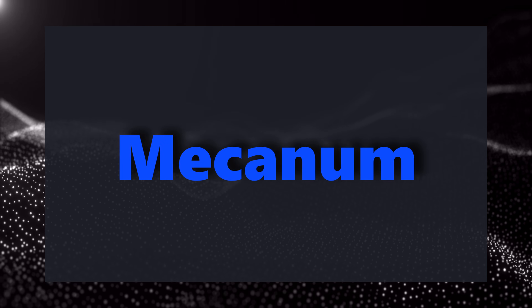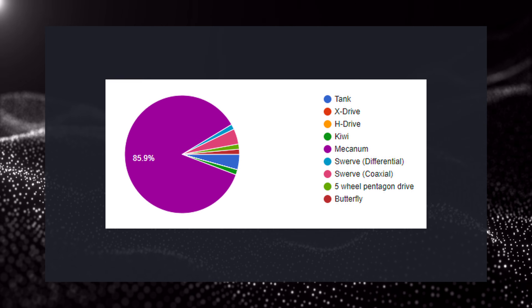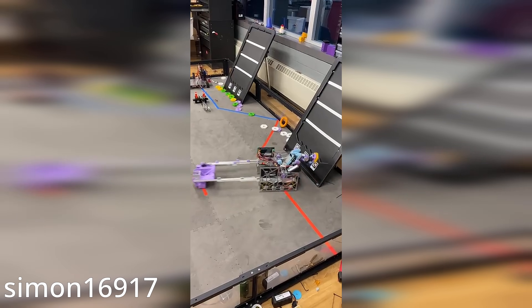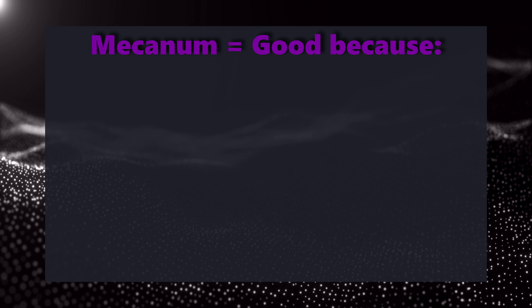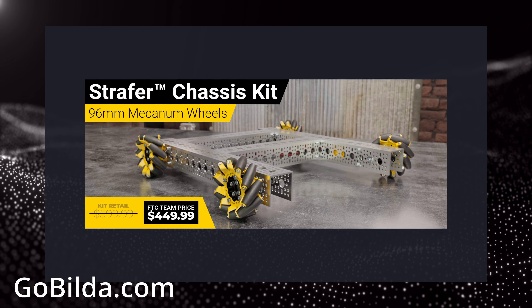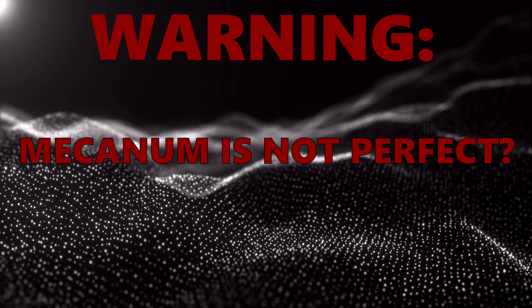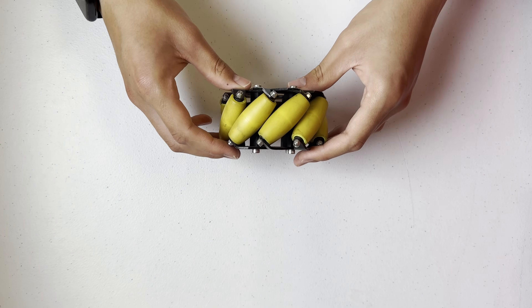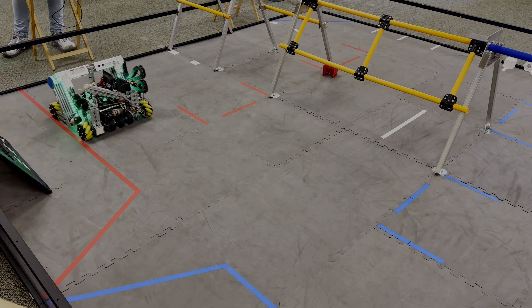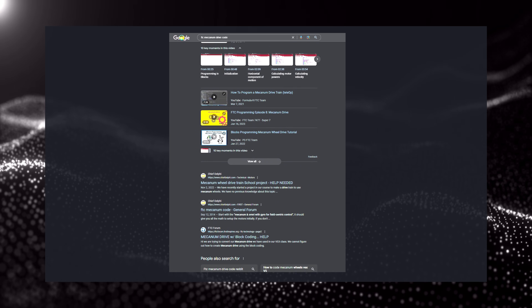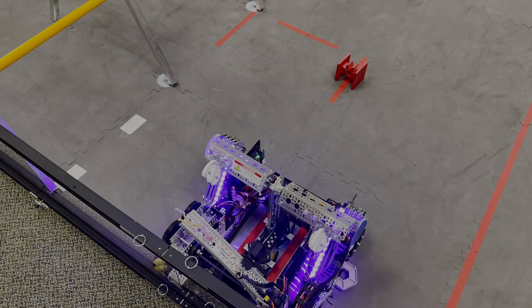Moving right along, let's talk about Mecanum, the first holonomic drivetrain on the list. It's also the most common drivetrain used in FTC, favored by almost 86% of the teams surveyed. Mecanum is capable of holonomic motion by simply changing the directions of the wheels' rotation, as seen in this diagram. They're easy to design, build, and program, as well as being extremely reliable. They are also relatively affordable, with a full kit from Gobilda clocking in at just $450 including the FTC discount. Mecanum slip is an issue where the rollers on the circumference of the wheels decrease traction substantially, leading to slower acceleration and deceleration and decreased response when changing directions quickly compared to drivetrains that use traction wheels. They also have less efficiency and speed when moving laterally than forwards. Programming is quite simple, and a plethora of resources and sample code can be found online, like fully functional op modes included in the FTC SDK. Roadrunner is able to be easily used with Mecanum, greatly increasing autonomous accuracy.